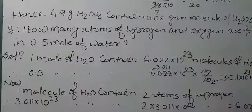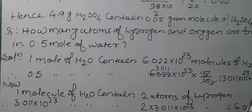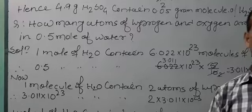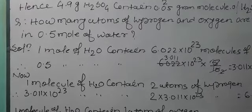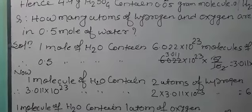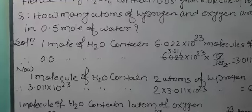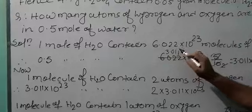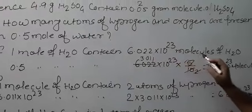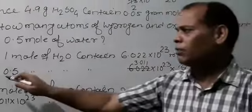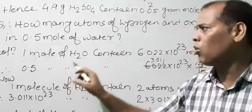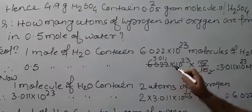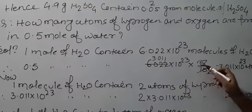As you know, 1 mole of any substance is equal to 6.022 × 10²³ of the corresponding entities — if it is an atom, then atoms; if it is a molecule, then molecules. So, 0.5 mole of water contains 6.022 × 10²³ × 0.5 molecules.